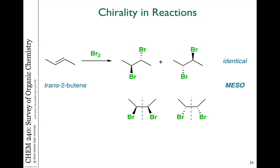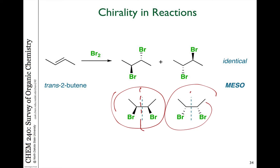If we take trans-2-butene and carry out the same reaction, we get a different result. What we form is a meso compound, and that can be easily seen when drawn in a particular fashion — you can see there's a plane of symmetry right through the molecule. It's a little harder to see in the open chain drawing. Even though we can get stereospecific introduction of groups — that is, the bromines are added on opposite sides from the bromonium — we still form racemic mixtures or meso compounds from these reactions.